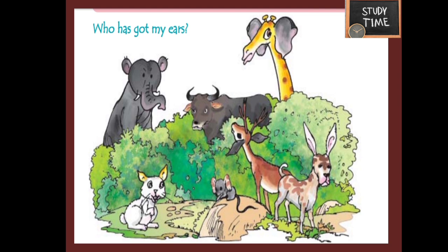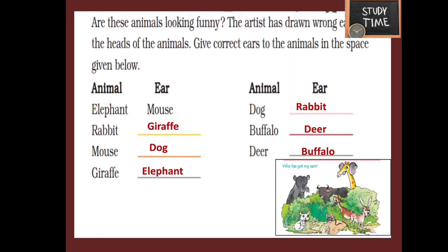Now we are going to do one exercise. In this picture you can see the animals — elephant, buffalo, giraffe, deer, dog, mouse, and rabbit — but the ears of those animals are misplaced. For example, elephant has got mouse's ears and giraffe has got elephant's ears. We are going to find which animal has got which animal's ears. Elephant has mouse's ears, rabbit has giraffe's ears, mouse has dog's ears, giraffe has elephant's ears, dog has rabbit's ears, and buffalo has deer's ears.